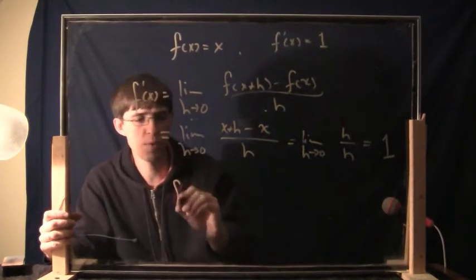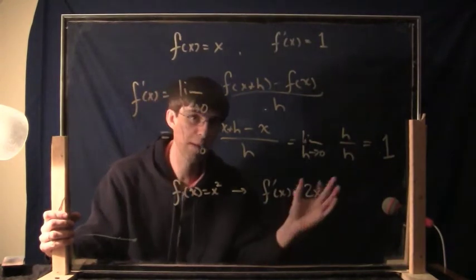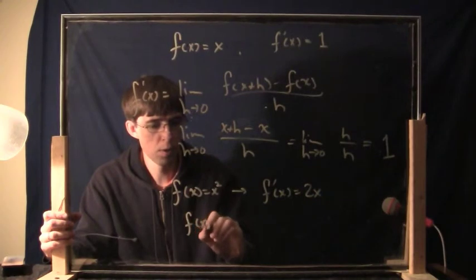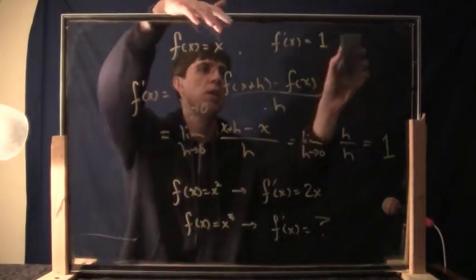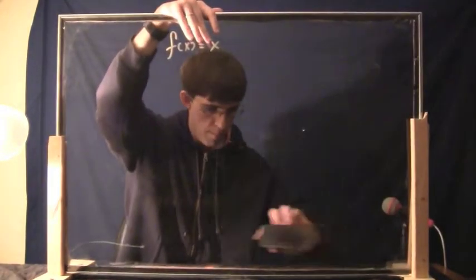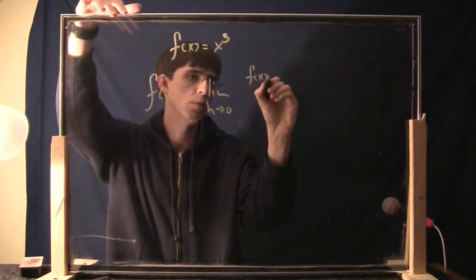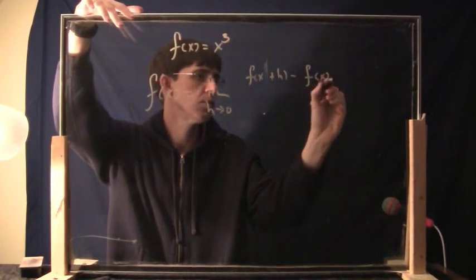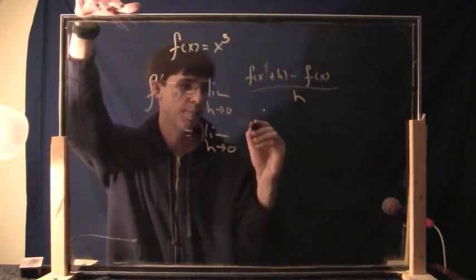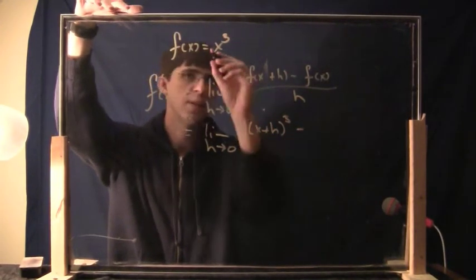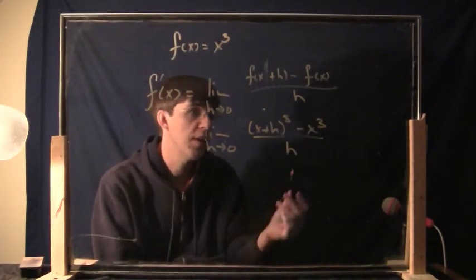Let's talk about other powers of x. We already know the derivative of x squared is 2x. Let's try x cubed. If f(x) equals x cubed, what is the derivative? It's the limit as h goes to 0 of f(x+h) minus f(x) over h. f(x+h) means you replace x by x+h, so it's (x+h) cubed minus x cubed over h. This is like when we did x squared, only here you have cubing instead of squaring — you have to do the FOIL three times: x plus h times x plus h times x plus h.